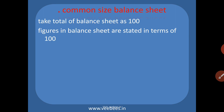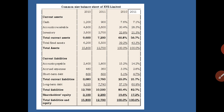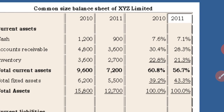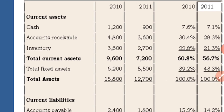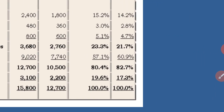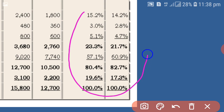In the case of a common size balance sheet, take the total of the balance sheet as 100. You draw and prepare the balance sheet in the same format, but the difference is that the balance sheet total is taken as 100 and all figures are stated in terms of that 100. Here, two years' details — 2010 and 2011 — are given, from which we prepare the common size balance sheet. The last two columns are the common size balance sheet columns.